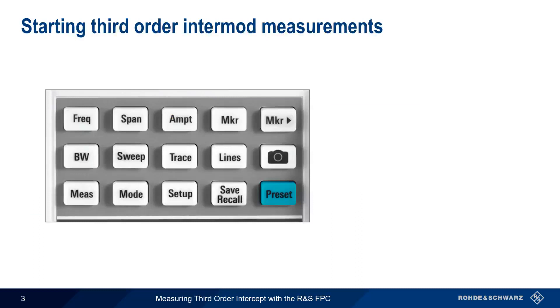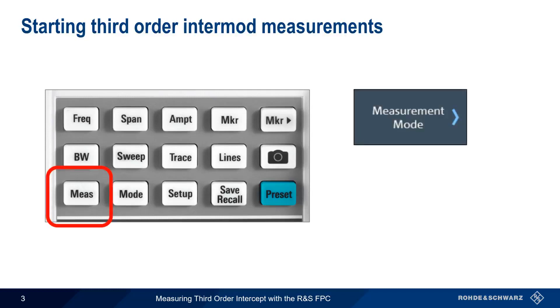On the FPC, third-order intercept measurements are called Third-Order Intermod. To access this measurement, first press the Measure hard key, then press Measure Mode and select Third-Order Intermod.